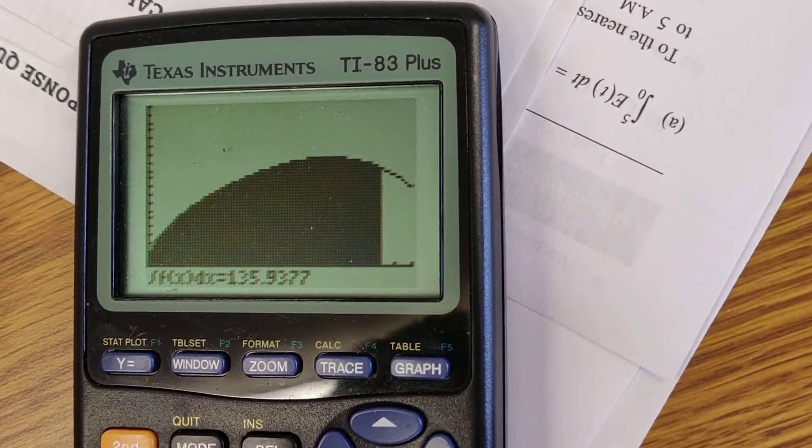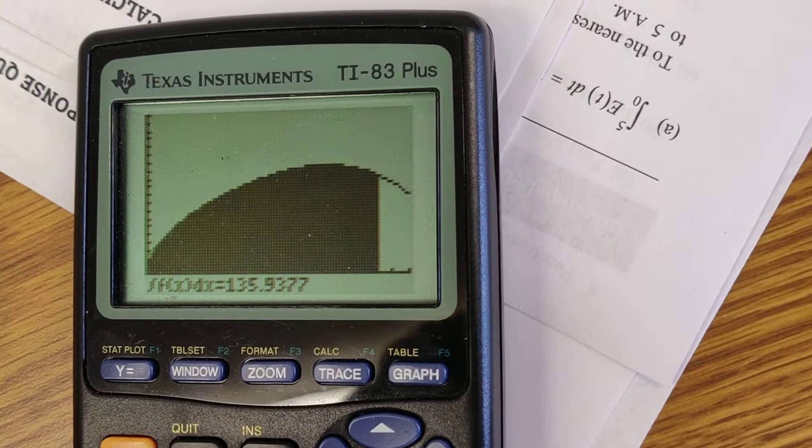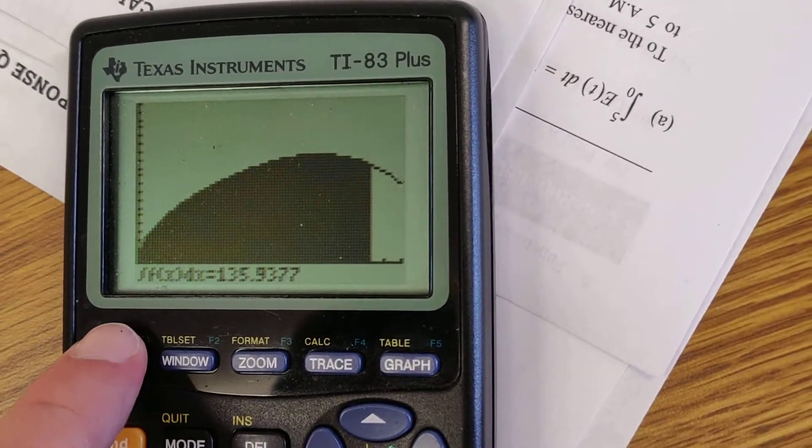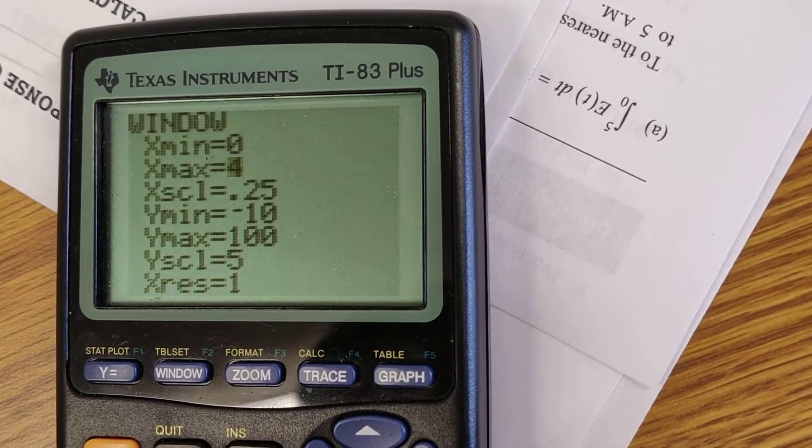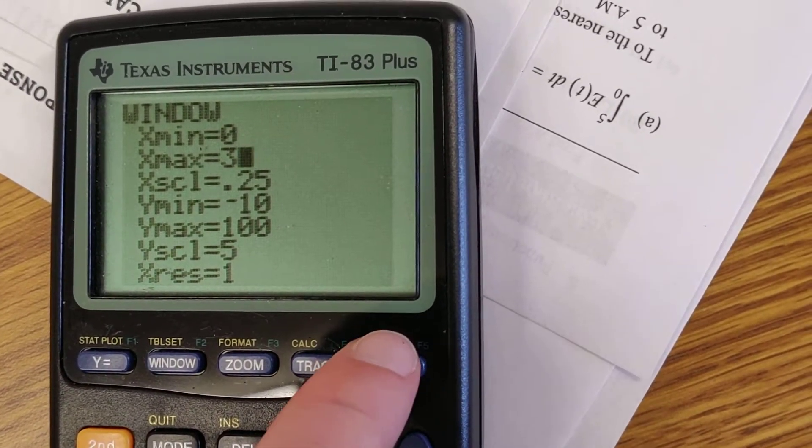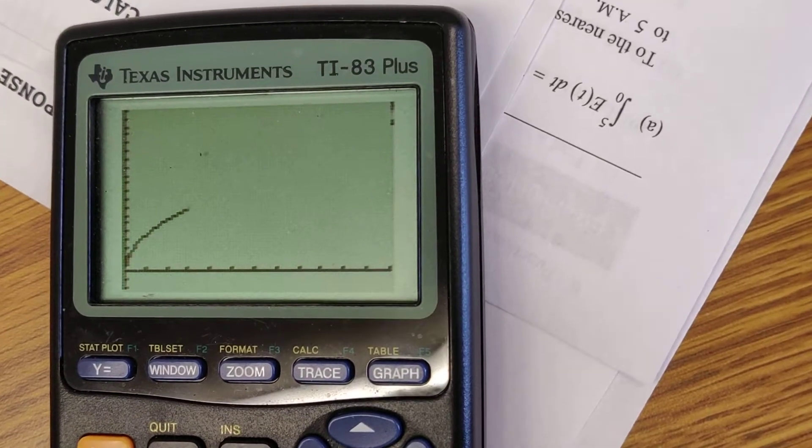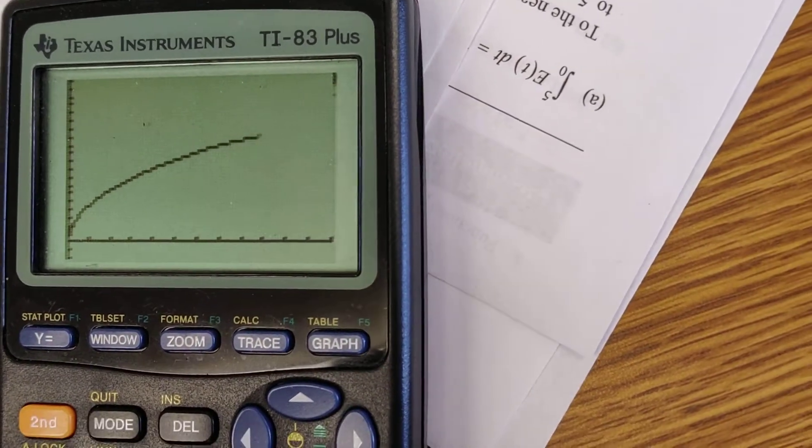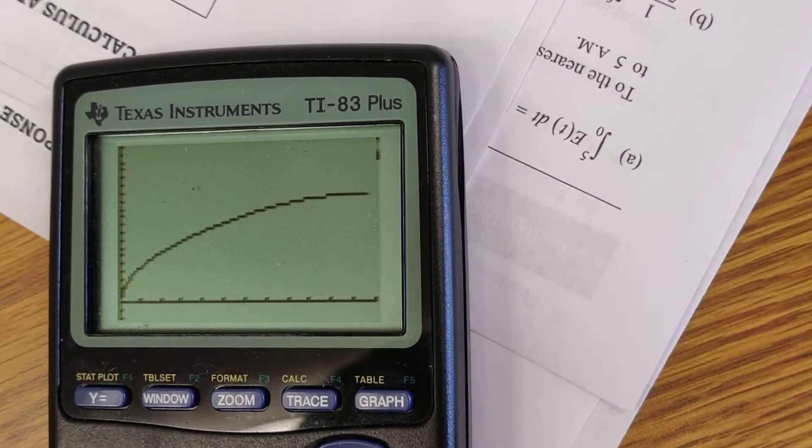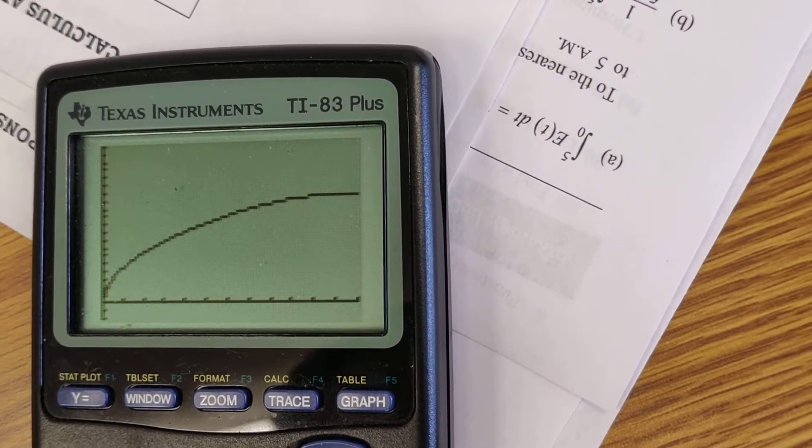Looks like the answer is 135.9. Still, I'm just going to change the window a little bit for the calculator. We're just going to go from 0 to 3. I'm unhappy that you didn't actually see my calculator find the area underneath the curve, which represents the distance. So let's do this again.